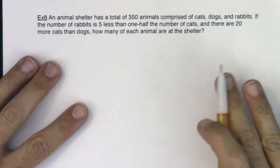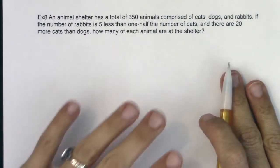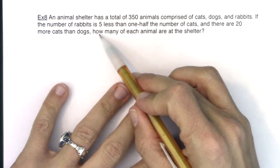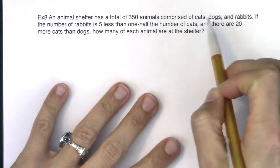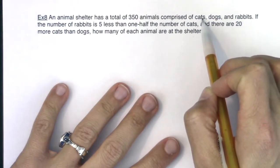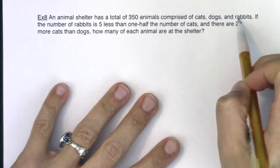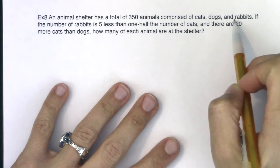Taking all that in, how many variables do I have? The question is asking how many of each animal are at the shelter, and they mentioned cats, dogs, and rabbits. So those must be my three variables.